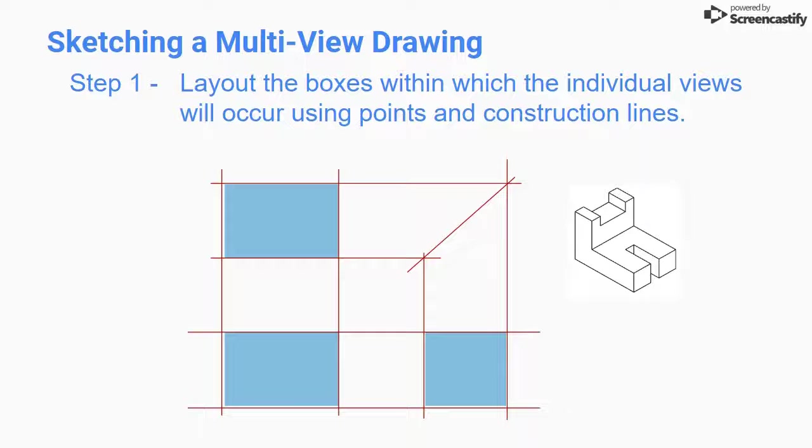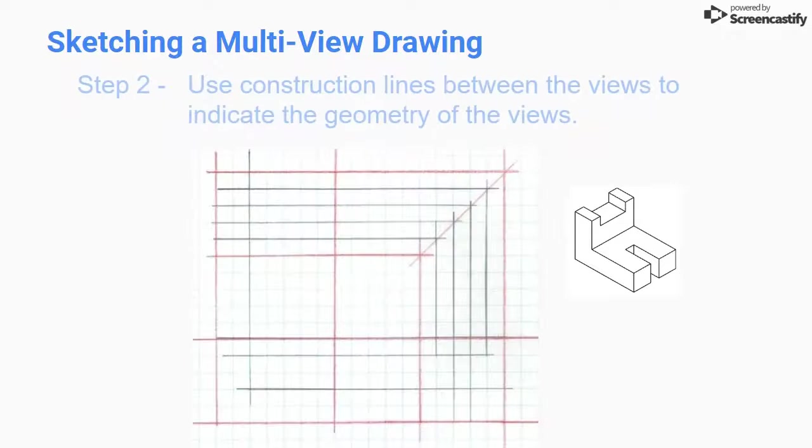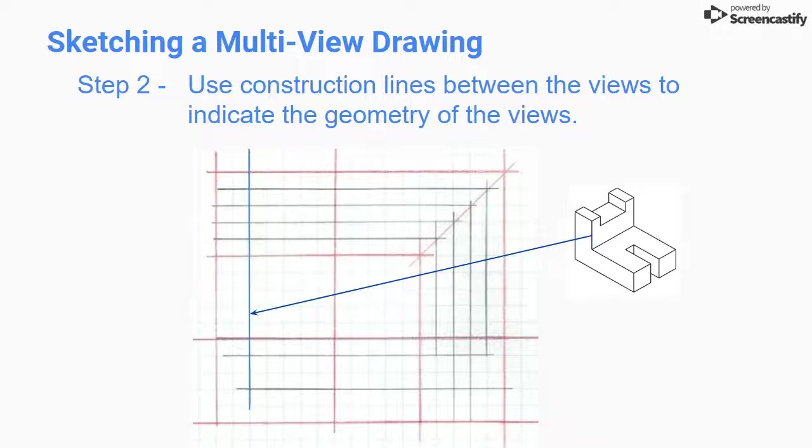Keep your lines very light at first, since some will get darkened into object lines, and others will be erased when the sketch is finished. The outside edges of the drawing views are easy to locate, but you can also start to fill in other edges of the part.